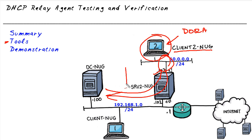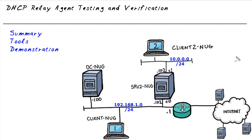Between DC-Nug and Server 2, the traffic is going to be unicast — meaning we have a specific source address and a specific destination address. The traffic between Client 2 and the DHCP relay is going to be broadcast-based.